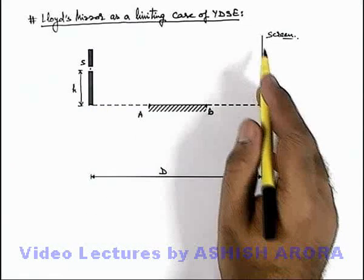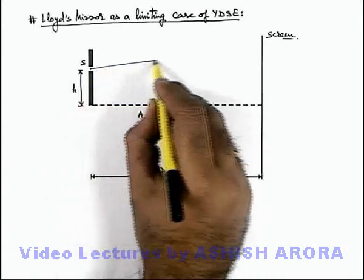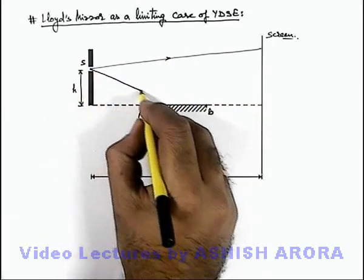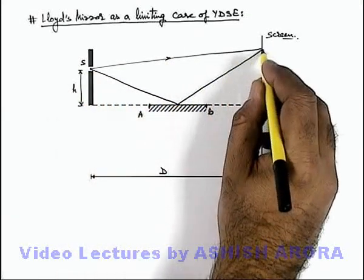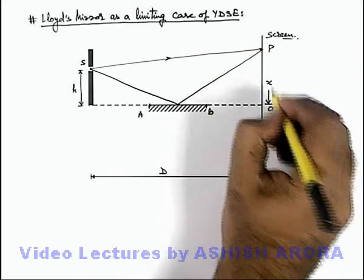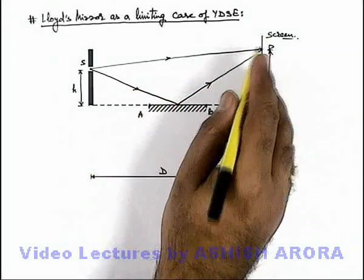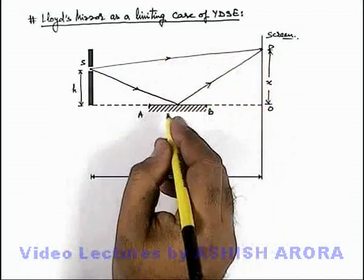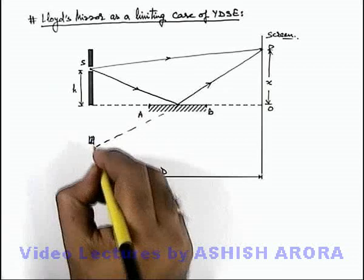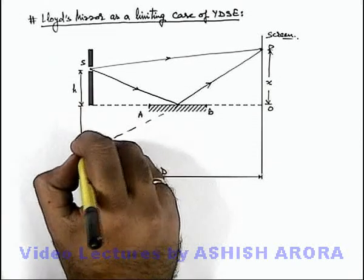In this situation, if we look at the various points on the screen where light is approaching directly from the slit, as well as where light is approaching that point after reflection from the mirror. If we consider a point P located at a distance x from the screen center O, two light waves are reaching at point P: one directly, and the other appears to be coming from a point which is the image of this slit, S prime, at a distance h below the mirror.